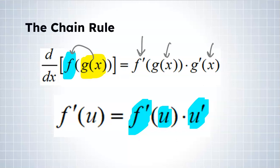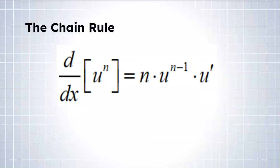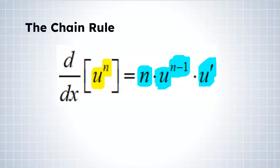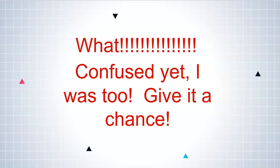Here's one more look at the chain rule with a power rule flavor. Imagine we have a function u raised to the n, where u is not just a single variable like x but its own function. To find the derivative, bring the n down, the new power on that base u is n minus 1, leave u alone inside, and then multiply by the derivative of u. That's another version of the chain rule. I was confused too when I first learned it, but once we get rolling I promise you'll find it easy and extremely helpful.